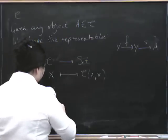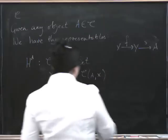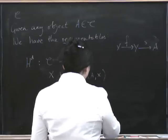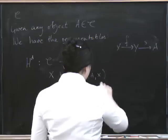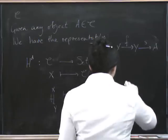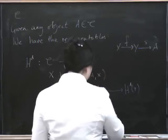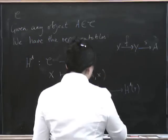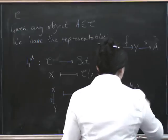And now, if we take a morphism from X to Y over here, where is it going to go? Well, it has to go from H upper A of X to H upper A of Y. This is C from A to X. This is C from A to Y.